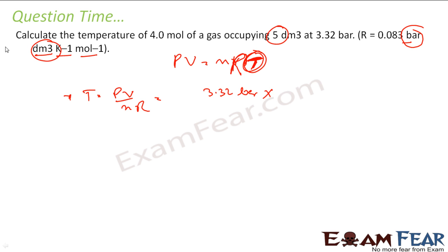Volume has to be in dm cube. So volume is what? 5 dm cube. By n number of mole, it will be in mole. So I will take 4 moles. And R is something which is given here, 0.083 bar dm cube per Kelvin per mole. And you see bar, bar gets cancelled.